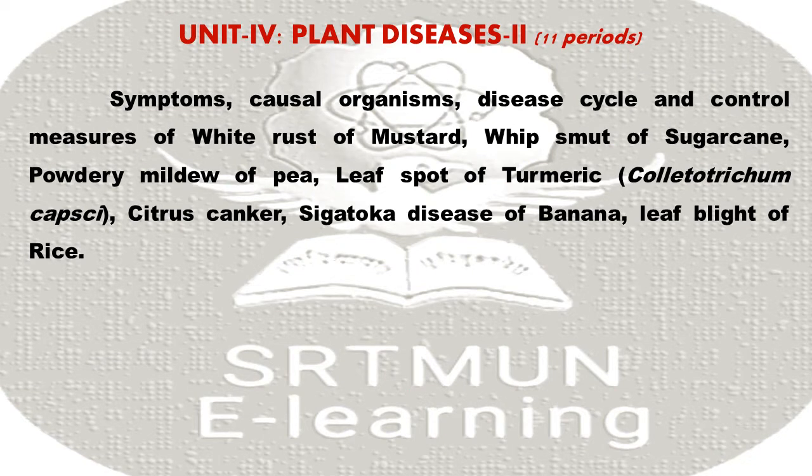Unit Fourth: Plant Disease Second. Symptoms, causal organisms, disease cycle, and control measures of: white rust of mustard, whip smut of sugarcane, powdery mildew of pea, leaf spot of turmeric, Colletotrichum species disease, citrus canker, Sigatoka disease of banana, and leaf blight of rice.